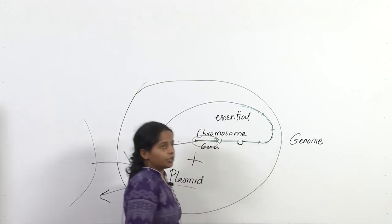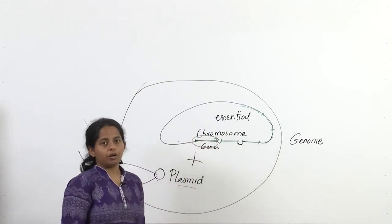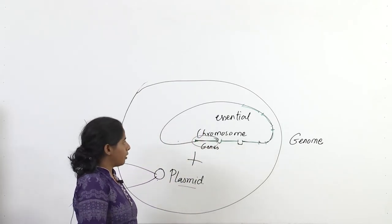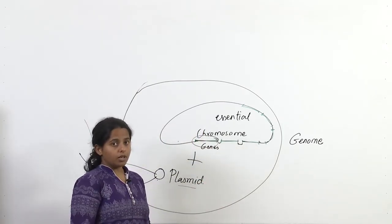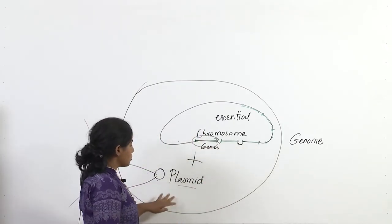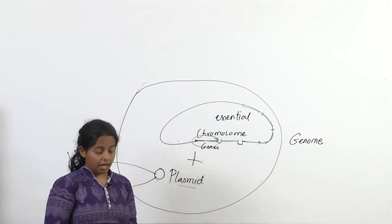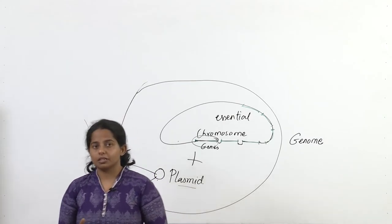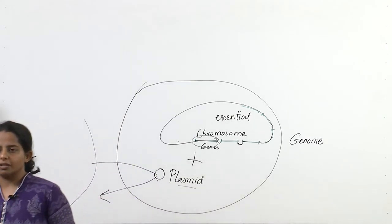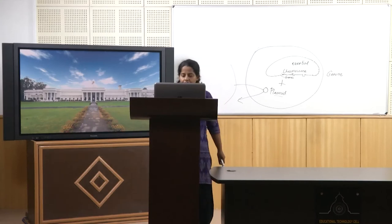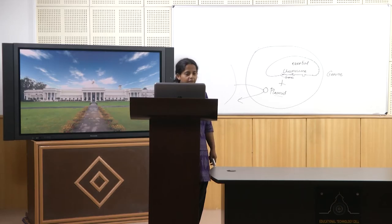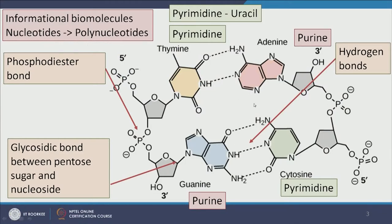When we talk about the human genome, we are not only talking about what is there in a chromosome, but we are also talking about the extra-chromosomal genetic material present in human cells. Now let us go down to the basics of what genes are, what DNA is, and what these nucleic acids are, so that it is more clear.